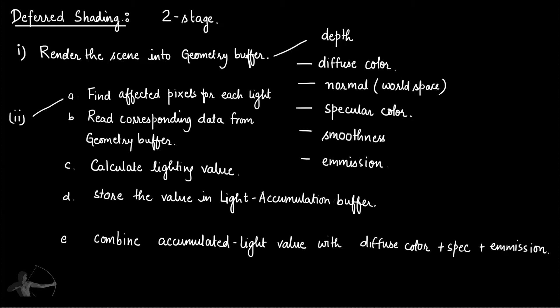The basic difference between deferred lighting and deferred shading is that in deferred shading, we don't have to render the scene again, because when we rendered it in the first step, we stored all the values needed to get the final color of the pixel in the geometry buffer.